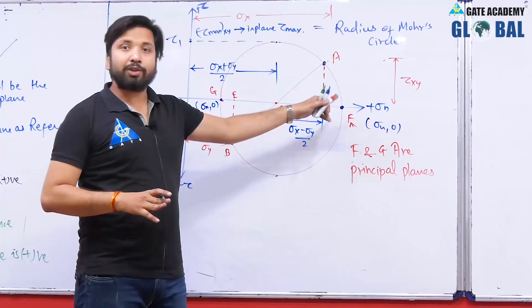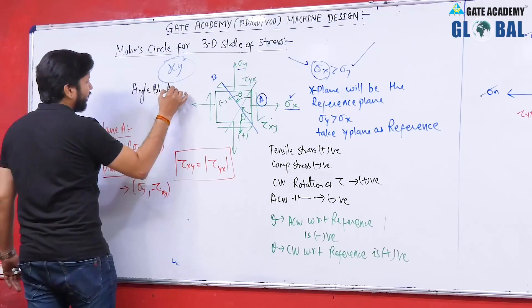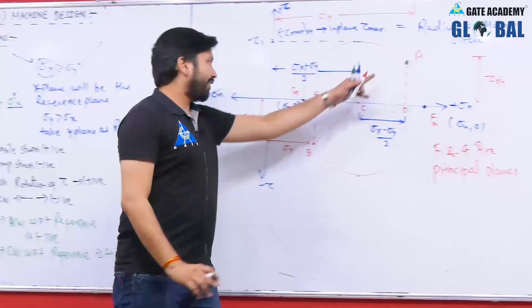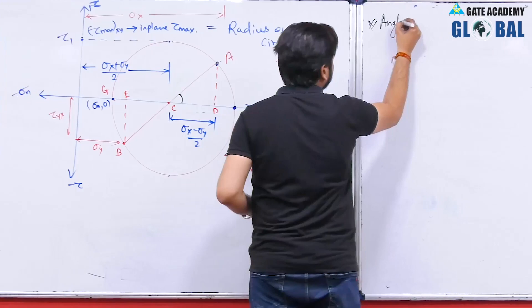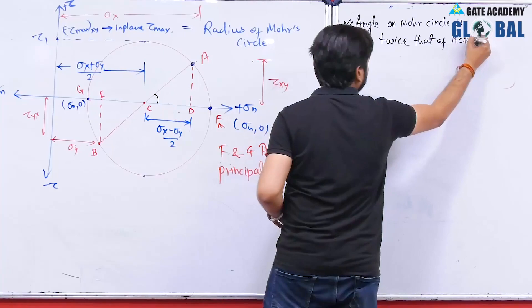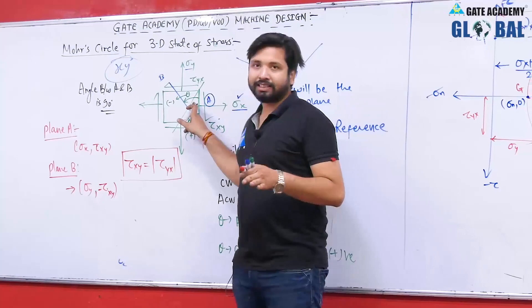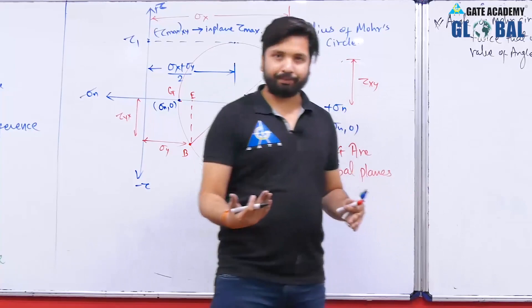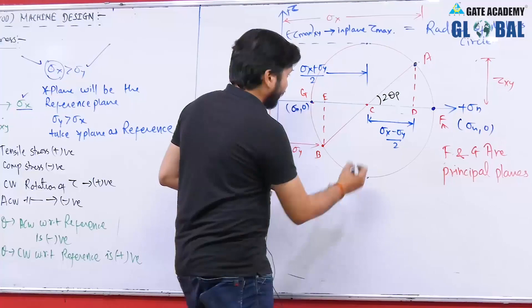Hence, the angle between two planes on Mohr's circle is twice the actual angle between those planes. So if the location of the principal plane is theta p in the actual state of stress, it will appear as 2 theta p on the Mohr's circle. Angles on Mohr's circle are twice the actual value of the angle.